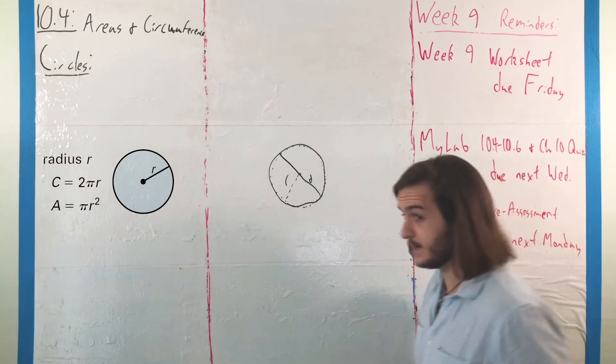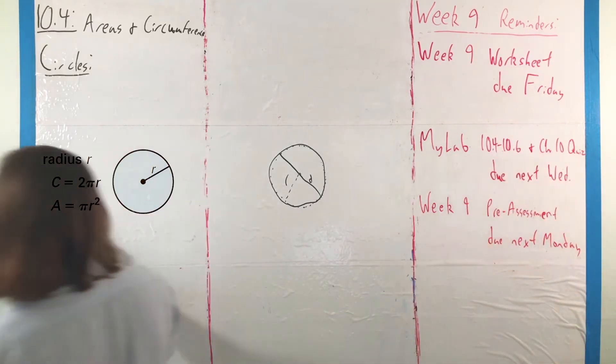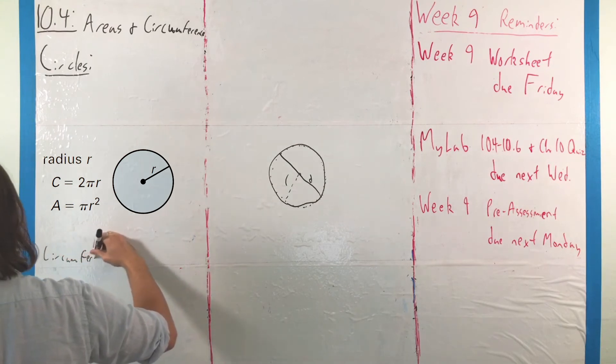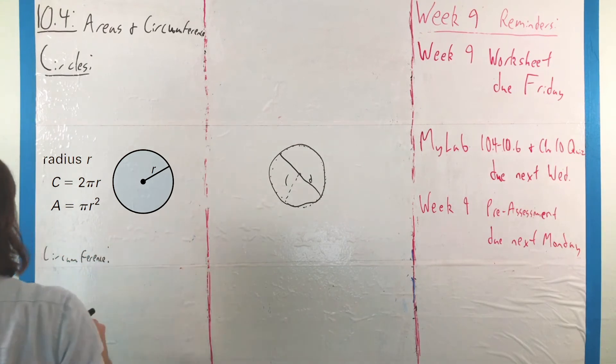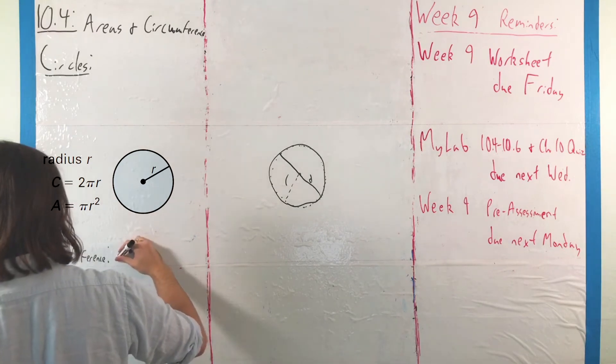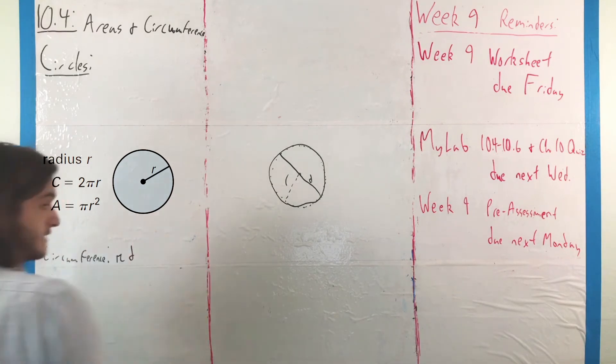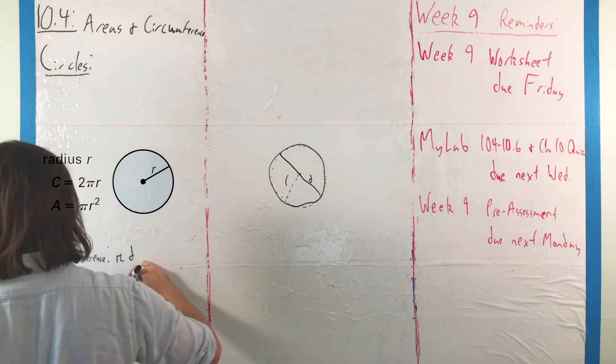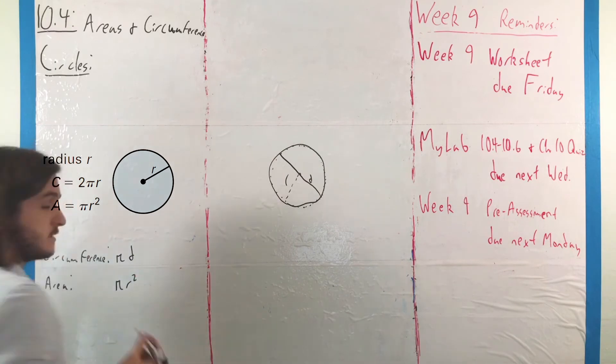So, if we want to find circumference, we just flip that over, and we say that the circumference of a circle is going to be pi times the diameter, while the area of a circle is pi times the radius squared.